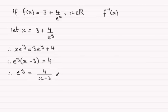Then if I take natural logs to both sides, I'm going to get y equals the natural log of 4 divided by x minus 3. So the inverse function must be equal to the natural log of 4 over x minus 3. That's how I'd go about finding the inverse function.